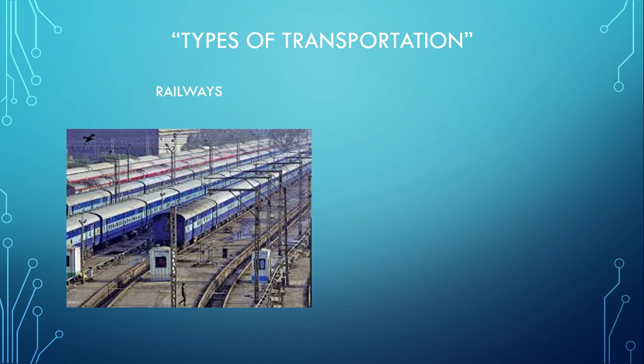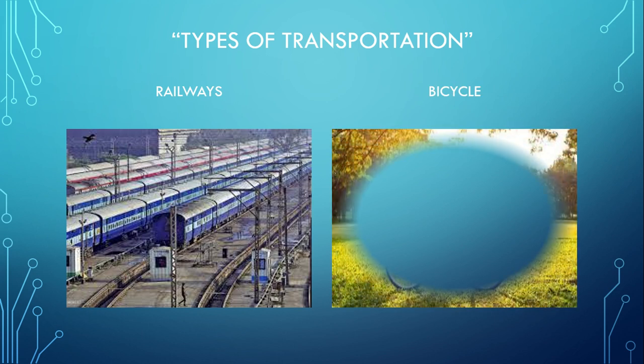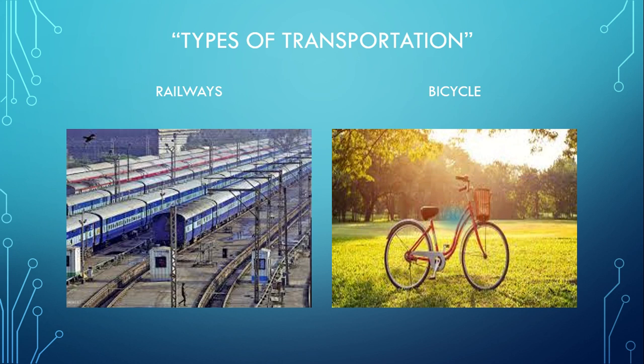That is the example of railways — you can see the red one here. Next one: bicycle. That is the example of a bicycle. So bicycle and railways are both types of land transportation.